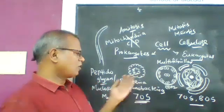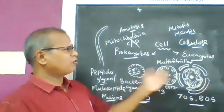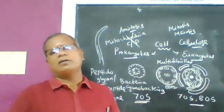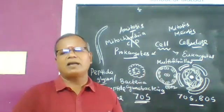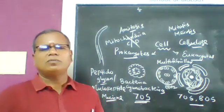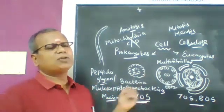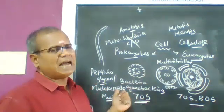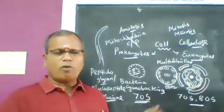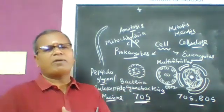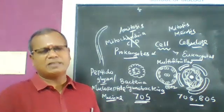Prokaryotes have amitotic cell division and sexual reproduction is absent. In eukaryotes, mitotic and meiotic cell division occurs and sexual reproduction is prominently present.